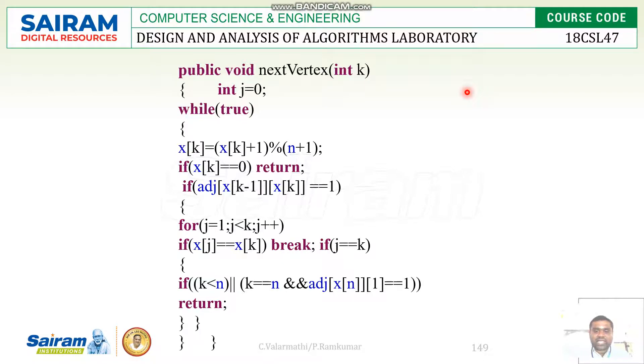Here, if x[k][j] is equal to x[k], then we have to complete. Otherwise, if j is equal to k, then again you have to check the condition k is less than n.